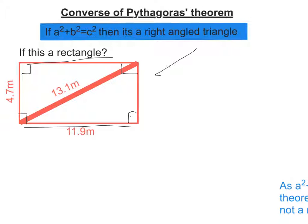So we are looking to prove that this triangle here, 11.9, 4.7, and 13.1, is a right-angled triangle. So as before, take the two short sides, A squared plus B squared, see what that is. So we've got 11.9 squared plus 4.7 squared.